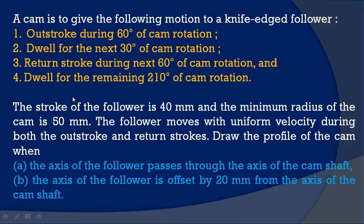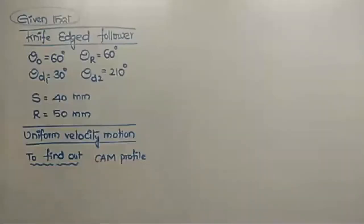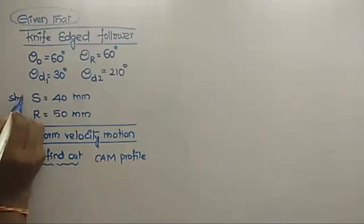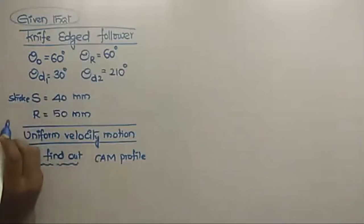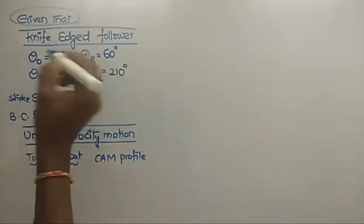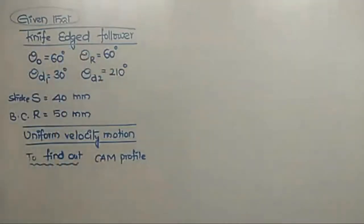Draw the profile of the cam when (a) the axis of the follower passes through the axis of the camshaft, and (b) the axis of the follower is offset by 20 millimeters from the axis of the camshaft. The follower here is a knife-edge follower. The follower travel (stroke) and cam rotation angles for different movements are given. First, you draw the displacement diagram.